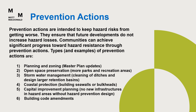Prevention actions are intended to keep hazard risks from getting worse and ensure that future developments do not increase hazard losses. Communities can achieve significant progress towards hazard resistance through prevention actions. Types and examples include planning and zoning, master plan updates, open space preservation, more parks and recreation areas, stormwater management such as cleaning of ditches and designing larger retention basins, coastal protection such as building seawalls or bulkheads, capital improvement planning with no new infrastructure in hazard areas without hazard prevention design, and building code amendments.